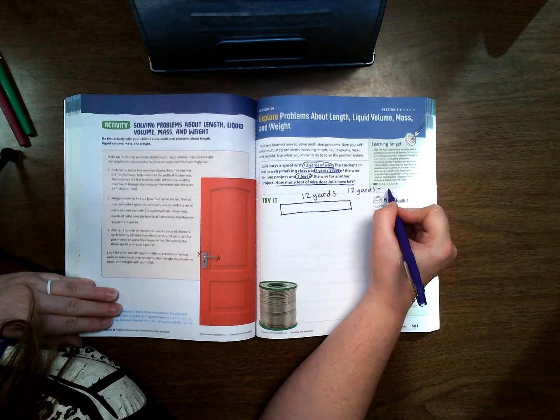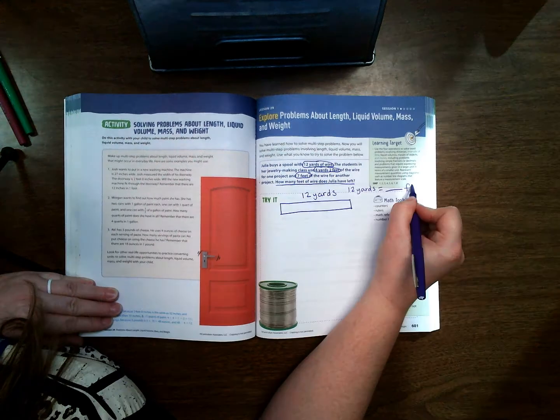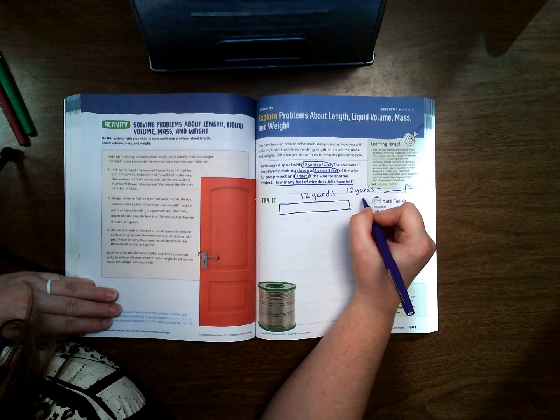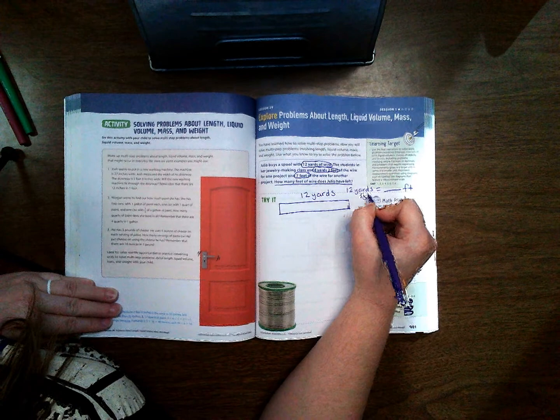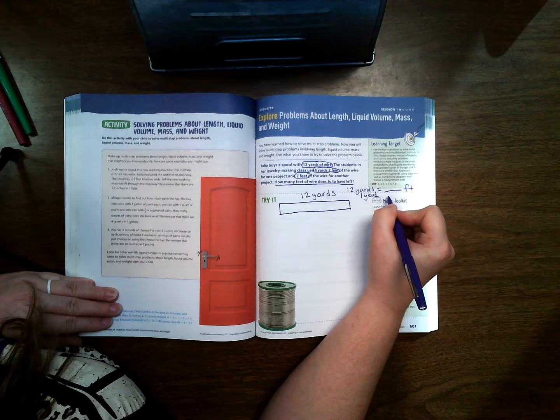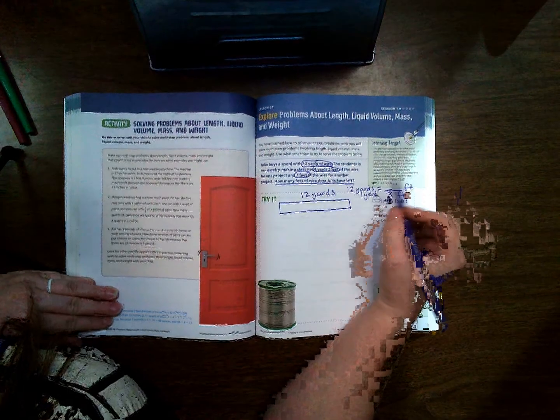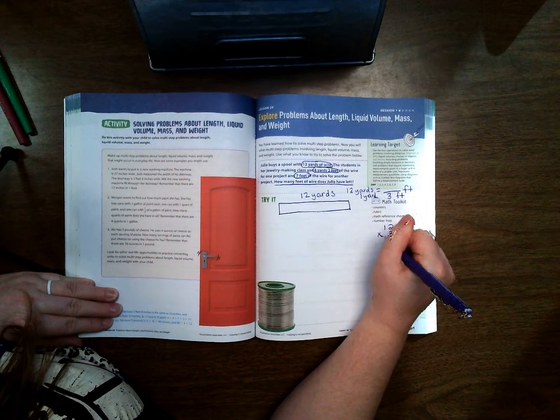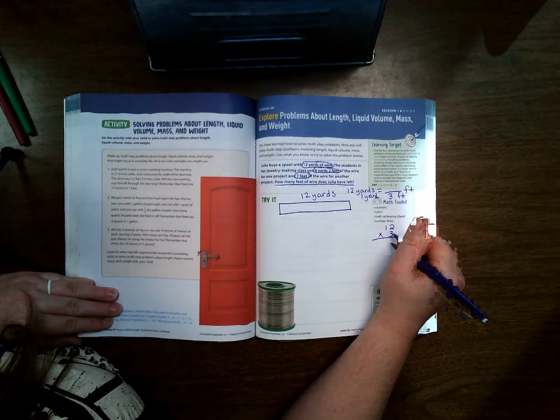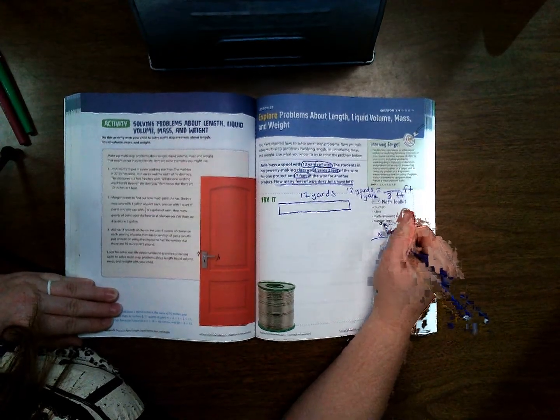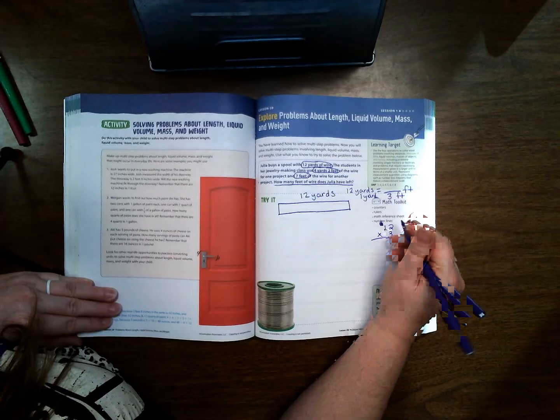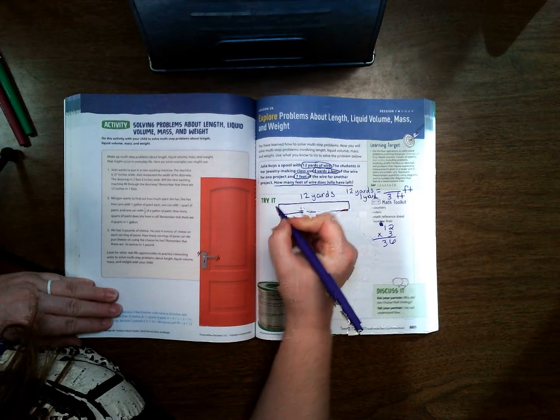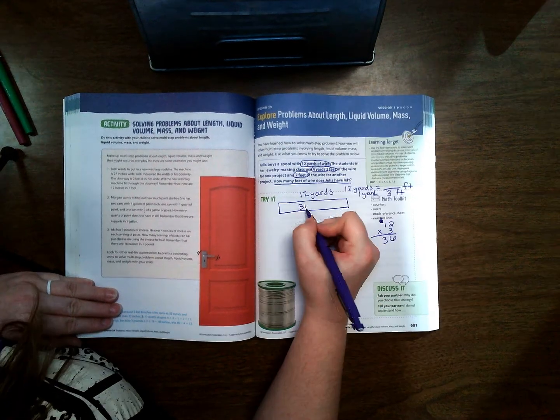We are going to take yards to feet. So we know that in one yard there is three feet. Okay, so I'm going to multiply 12 times 3. Two times three is six, three times one is three, so I have 36 feet of wire.